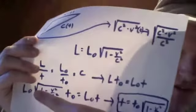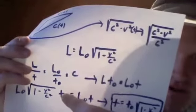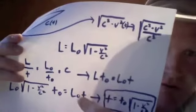So that then becomes L sub O times the square root of 1 minus V squared over C squared times T sub O is equal to L sub O times T.